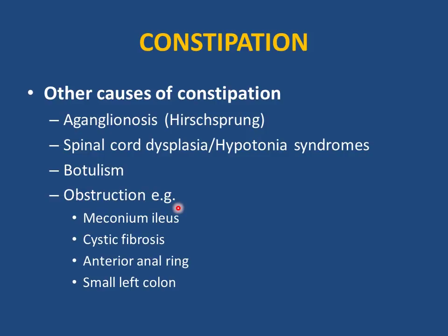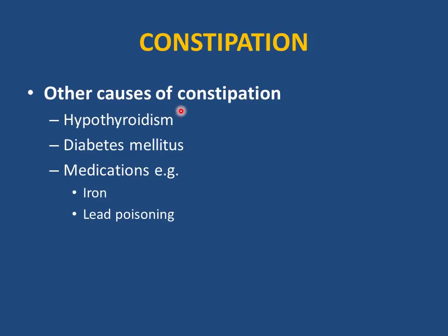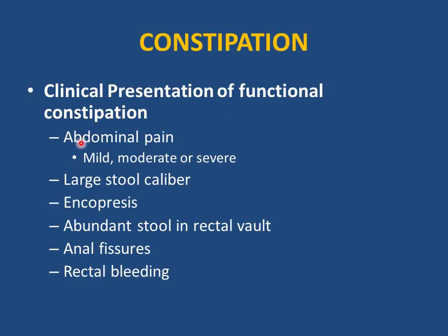Additional causes of constipation: obstruction — meconium ileus, cystic fibrosis, anterior ectopic anus, small left colon in babies of diabetic mothers. Hypothyroidism — always palpate the thyroid and ask about family history. Diabetes mellitus. Medications such as iron supplements can cause constipation. Lead poisoning should also be considered.